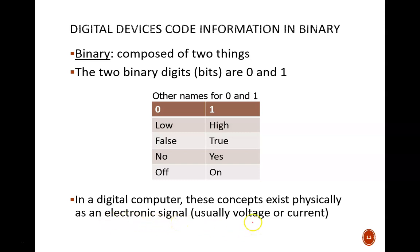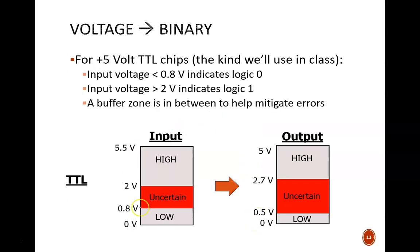But these theoretical concepts require a real physical quantity in order to function in a real physical computer. That quantity is some type of an electric signal, which is voltage for the circuits we'll build in this course. The diagram on this slide shows how an analog voltage signal will be interpreted as a digital logic signal in a 5 volt system with the types of chips we'll use. These chips are where the conversion from analog to digital signals takes place.